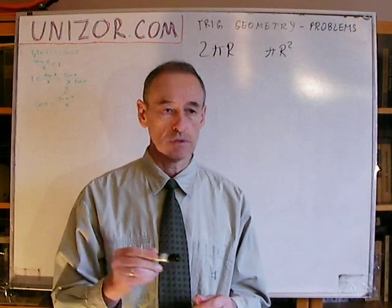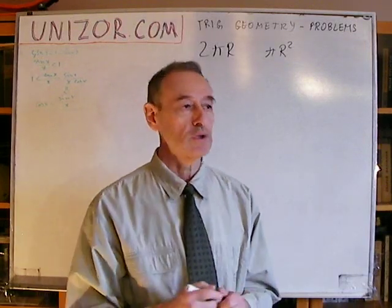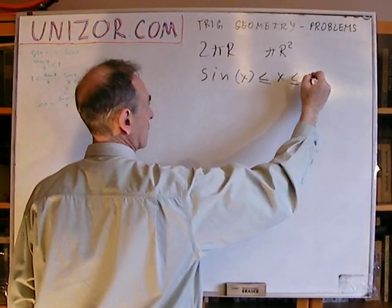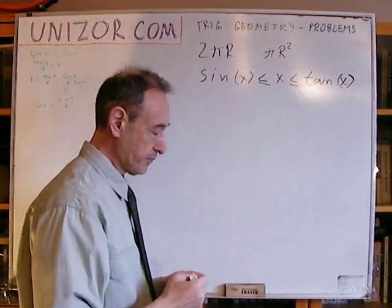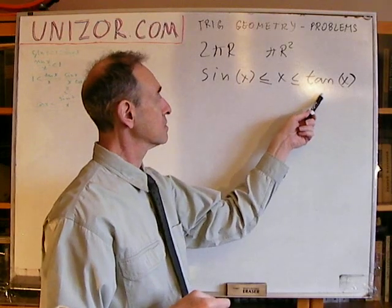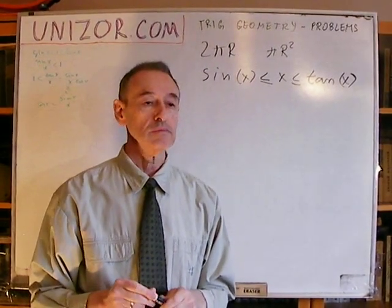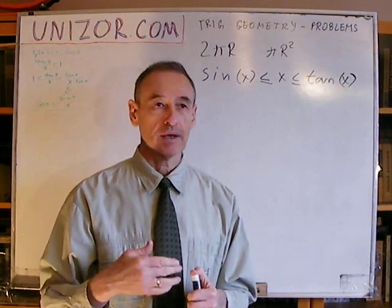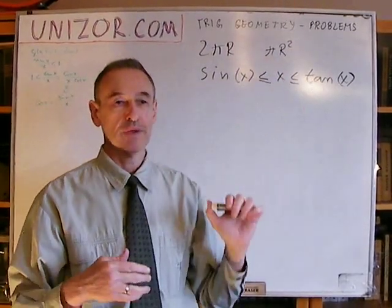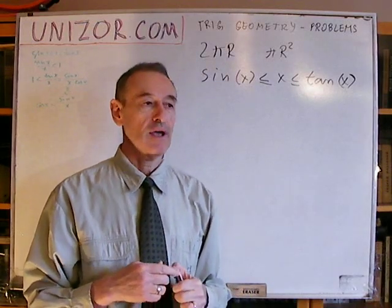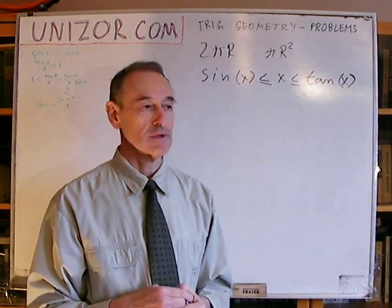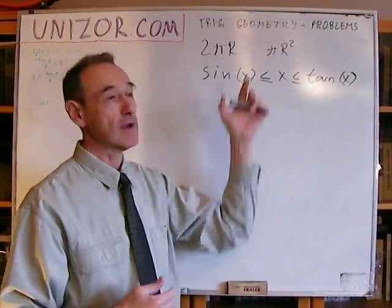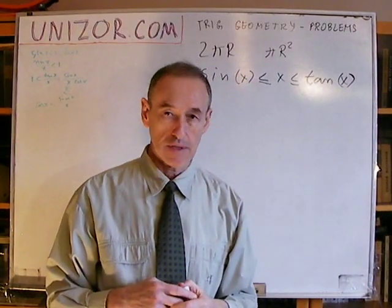In one of the previous lectures — the one about trigonometric inequalities — I derived an inequality between sines, tangents, and arguments in radians. This formula was actually based on certain geometric properties, and that's why it wouldn't be correct to derive geometric properties from it. However, as an illustration, I would like, based on this inequality as given, to derive these formulas for the circumference and area of the circle.